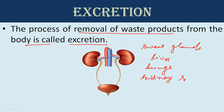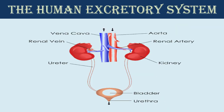Our kidney system, or excretory system, consists of four parts. The first one is the kidney, the second is the ureter, the third one is the urinary bladder, and the fourth is the urethra.